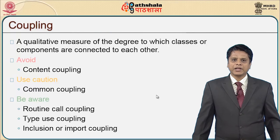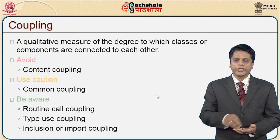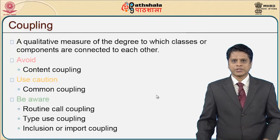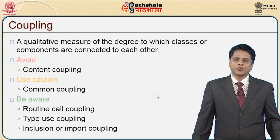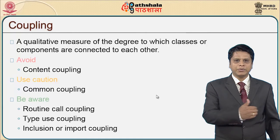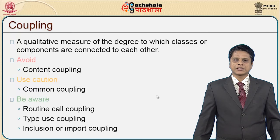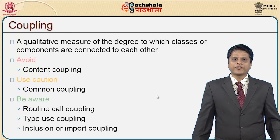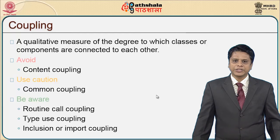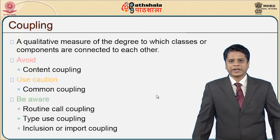As this cohesion has been discussed: cohesion is within the module, whereas coupling is between the modules. Cohesion talks more about the functionality or the strength of those modules. Coupling is a qualitative measure of the degree to which classes or components are connected to each other — how connected are two different modules among each other.